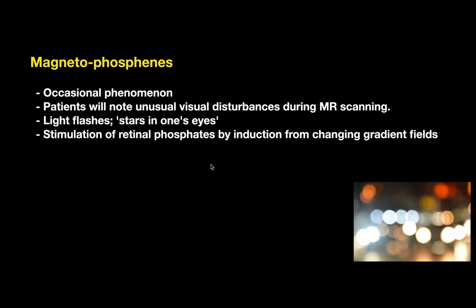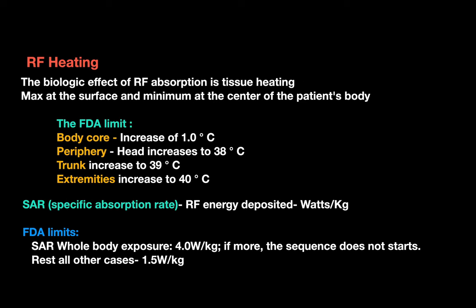Regarding radiofrequency heating, the biological effect of RF absorption is tissue heating — maximum at the surface and minimum at the center of the body. FDA limits are: body core temperature increase up to 1°C, periphery up to 38°C, trunk up to 39°C, and extremities up to 40°C.